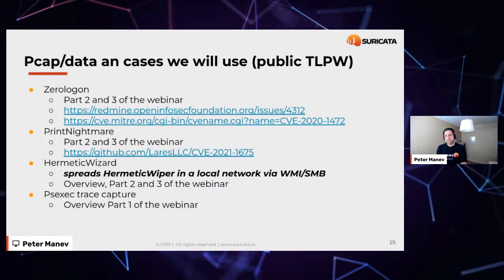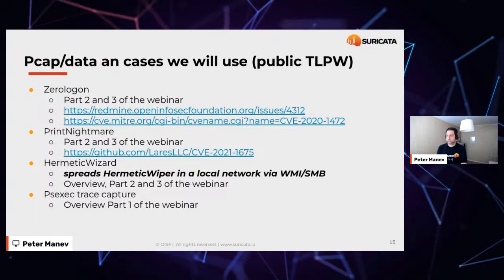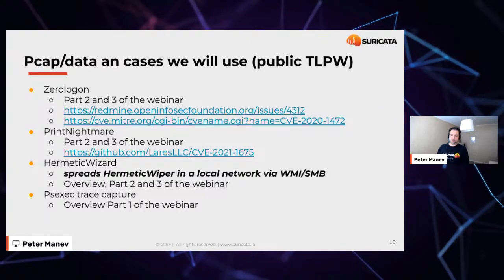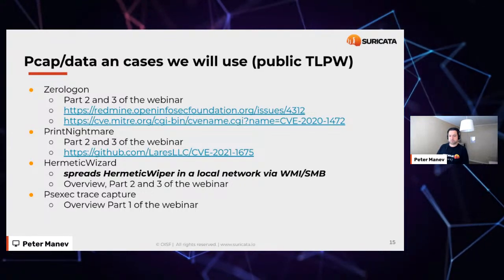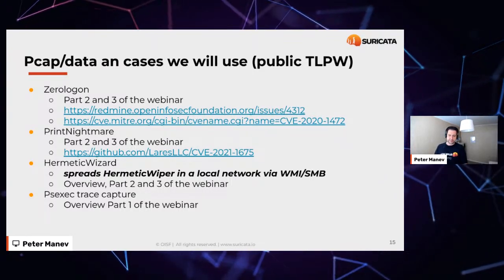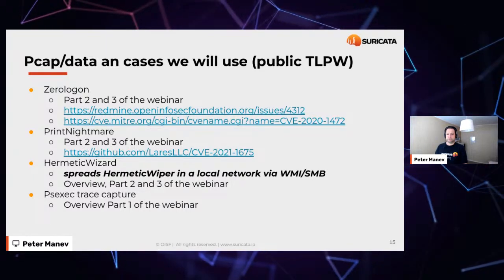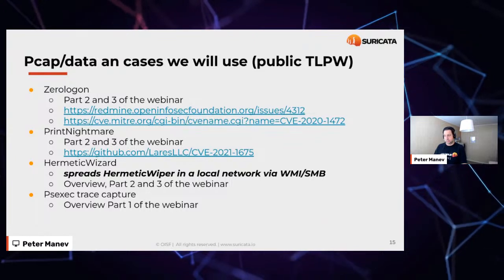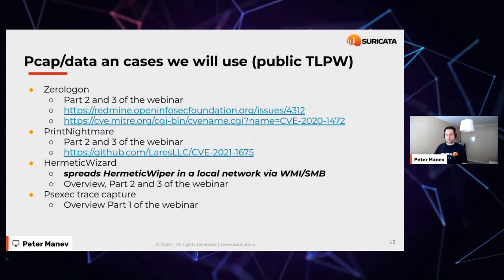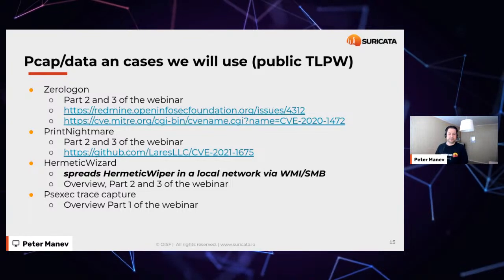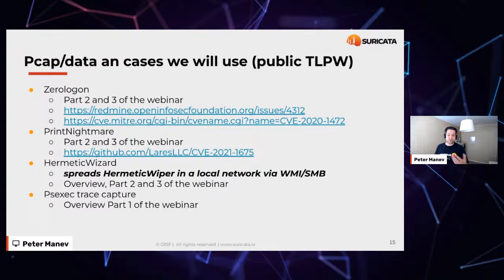Some of the data and cases we'll look at are already pretty well-known. We have ZeroLogon — we'll review a pickup of that. We'll look at PrintNightmare and what could be detected there. We'll have an overview of Hermetic Wizard. This is all public, TLP-white classified information. In part one, we'll also look at a simple PSExec trace capture and what Suricata data gives us — concentrated on lateral movement in Windows environments, focusing on SMB.